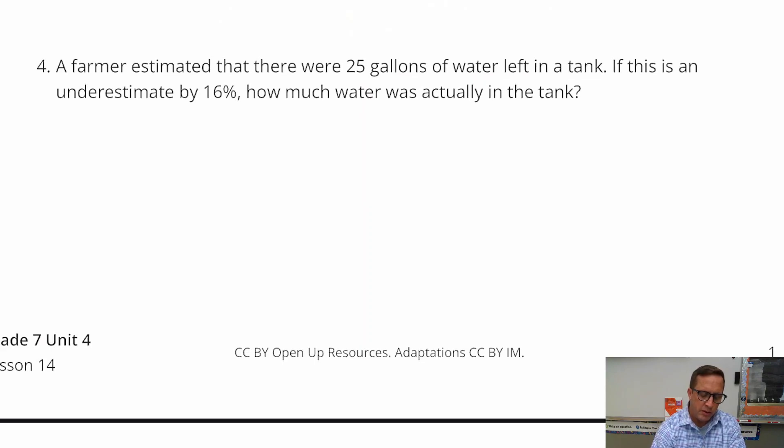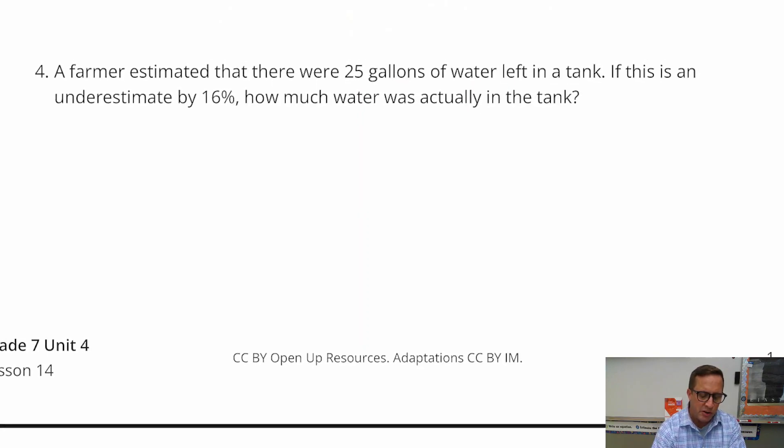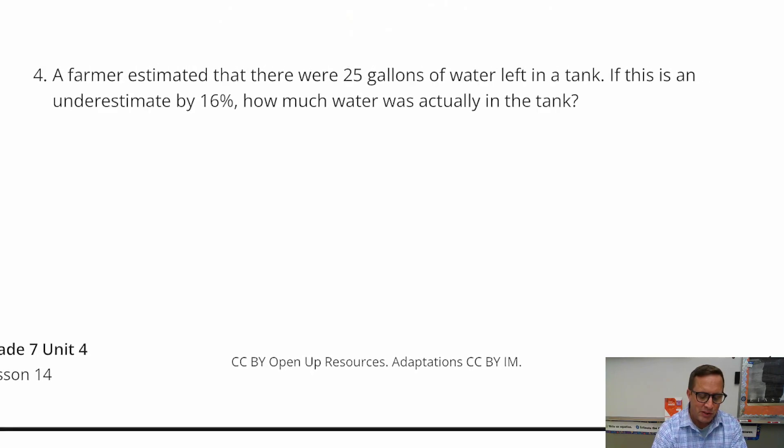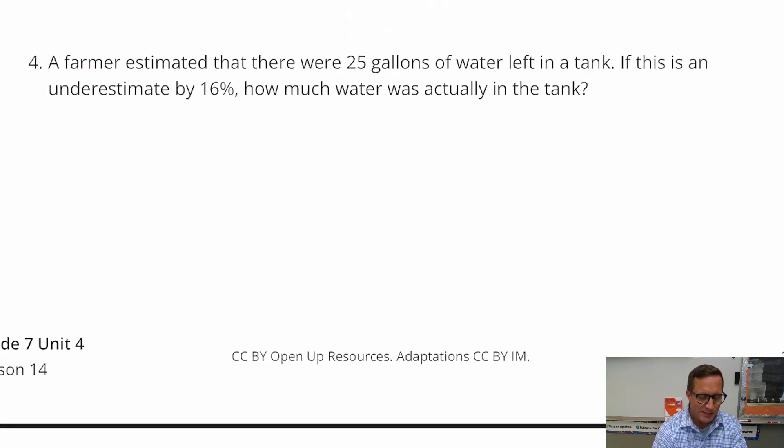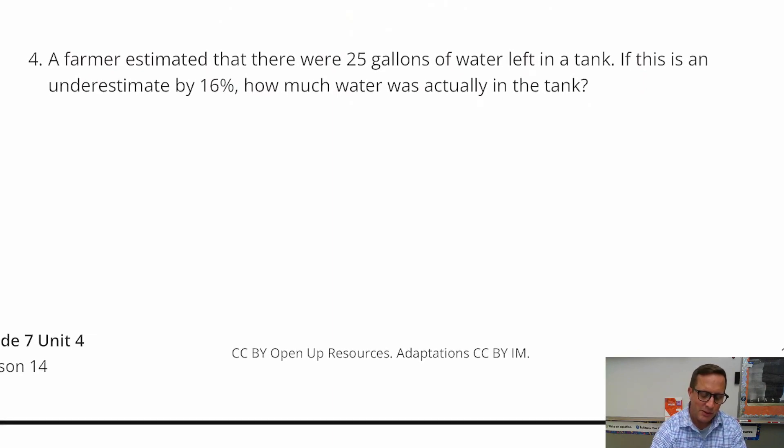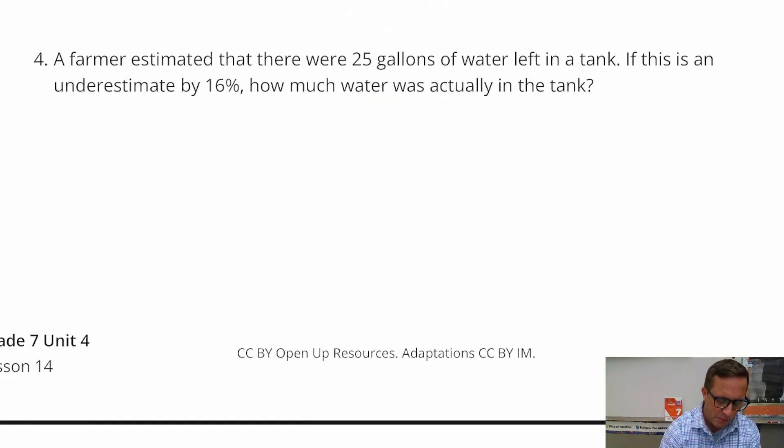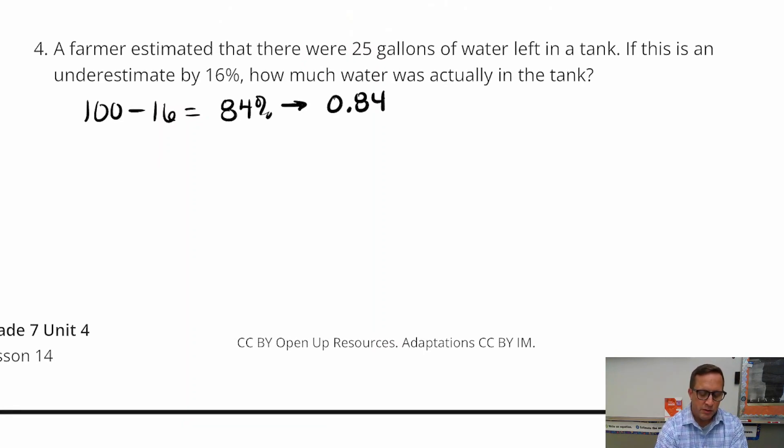A farmer estimated that there was 25 gallons of water left in the tank. If this is an underestimate by 16%, how much water was actually in the tank? Underestimate means we're going to take that away from 100%. So we're going to do 100% minus 16, which equals 84%, which in turn equals 0.84 as a decimal.